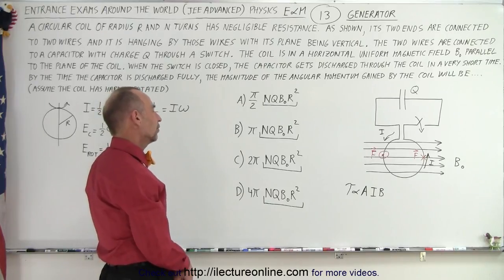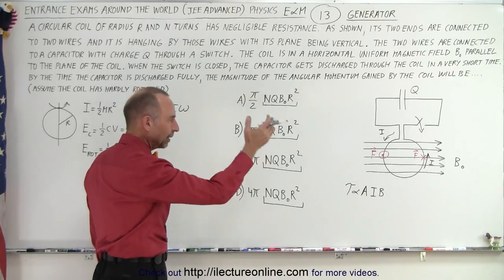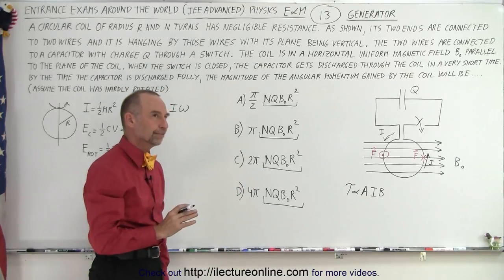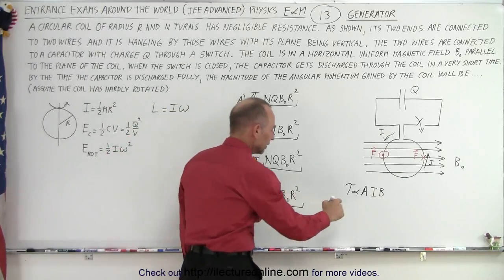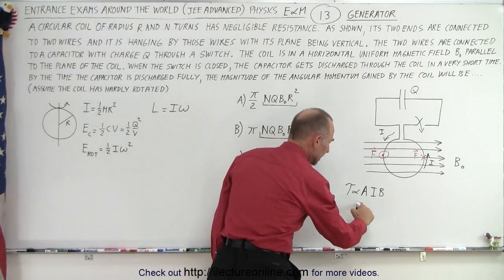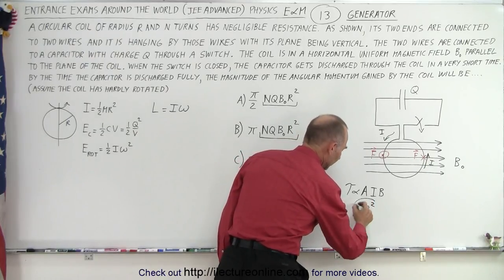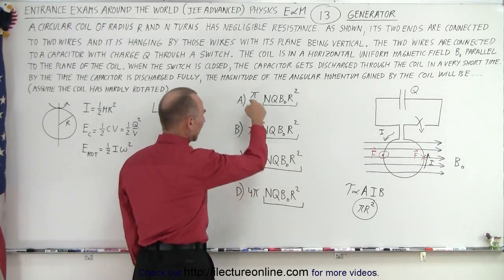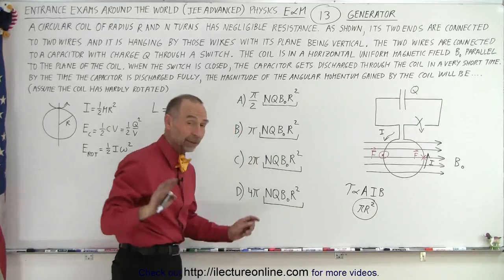If that's the case, we have the magnetic field, we have a current that's going to run for a while until it's fully discharged, we have a cross-sectional area. So the cross-sectional area is going to be πr². Maybe that gives me some more idea here, because I have an r² everywhere, and then I have a π/2, π, 2π, 4π. So I'm leaning towards answer B, but we're not done yet.